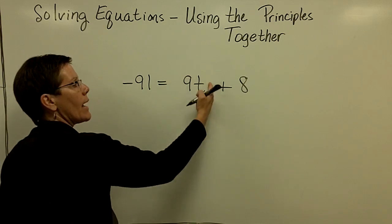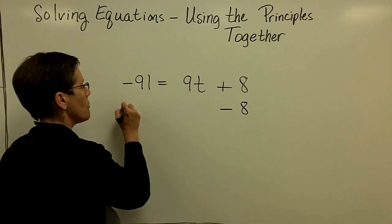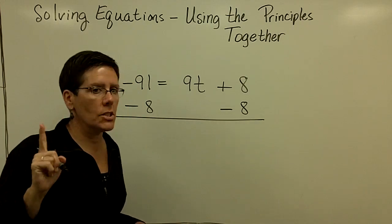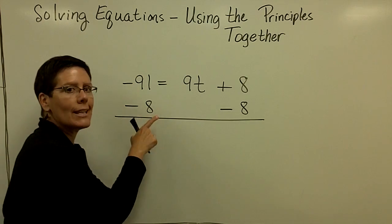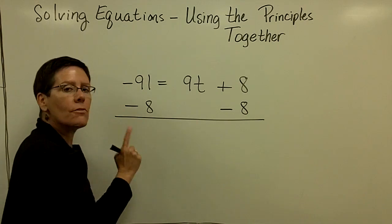So the way to get that alone, since it has a plus 8, is to subtract 8 from both sides. Please remember, it's called the addition principle. When you subtract 8, you're adding a negative 8. So you're adding these two negative numbers.